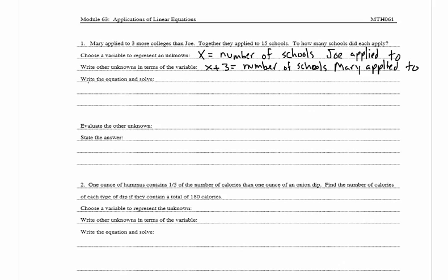Now it wants us to write the equation and solve. So if x represents the number of schools Joe applied to, plus the number of schools Mary applied to which is x plus three, and together they applied to 15, we get x plus (x plus 3) equals 15. Adding like terms and subtracting three from both sides gives 2x equals 12. Dividing both sides by 2, x equals 6.